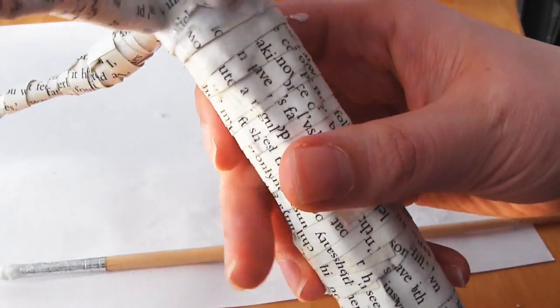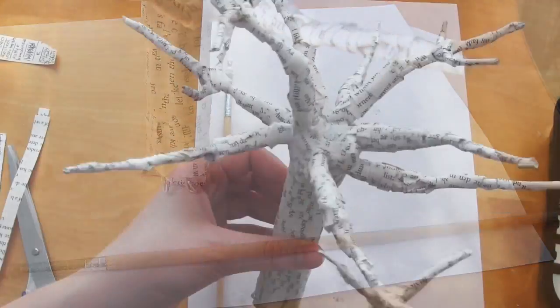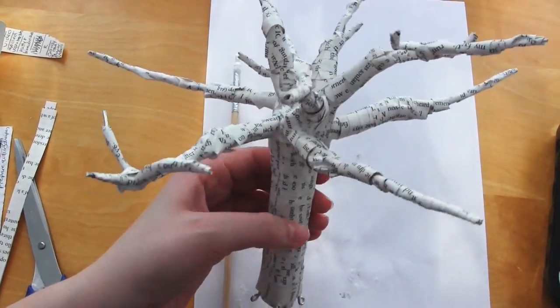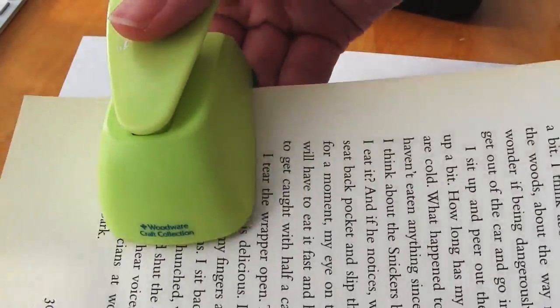And the last step is to add the leaves. As I said before, I would definitely recommend finding a leaf paper punch because it just makes your life so much easier and it's so much quicker.